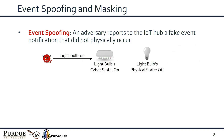In this environment, there are two types of attacks. First, in event spoofing attacks, an adversary reports to the IoT hub a fake event notification that did not physically occur. For instance, the adversary reports the light bulb on event to the IoT hub although the light bulb's physical state is off. Through this attack, the adversary can trigger apps conditioned on the light bulb on event, such as ones that would open the patio door and create an unsafe environment.